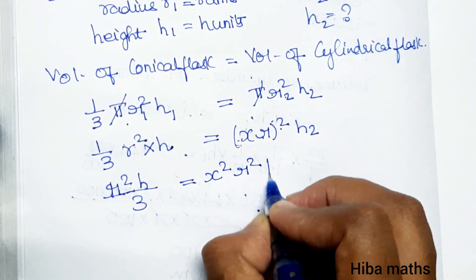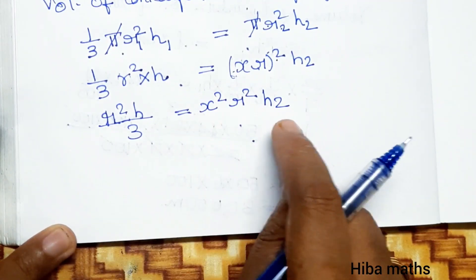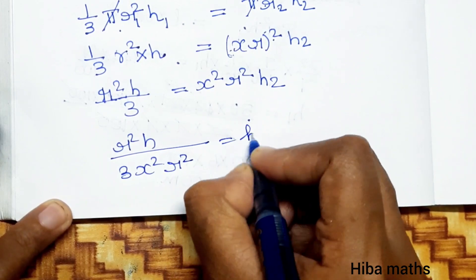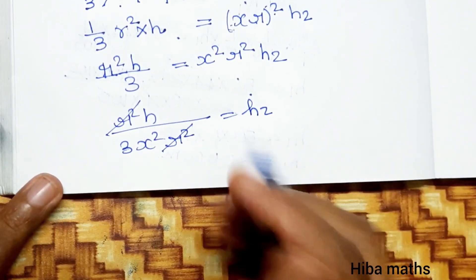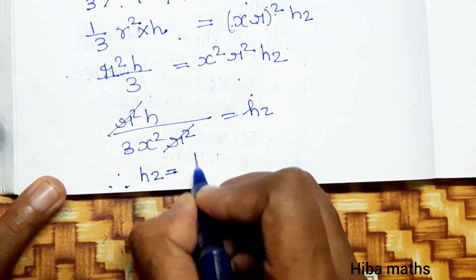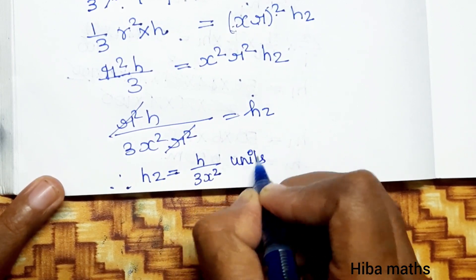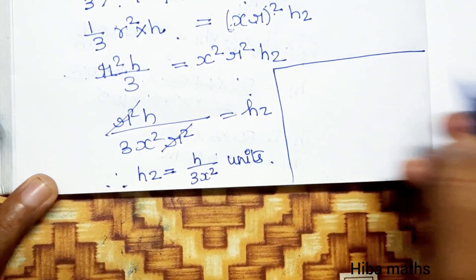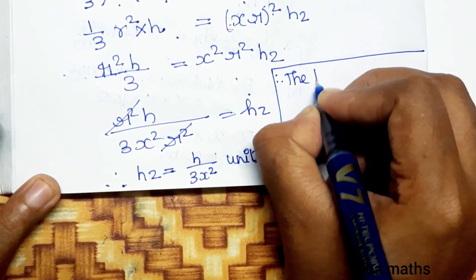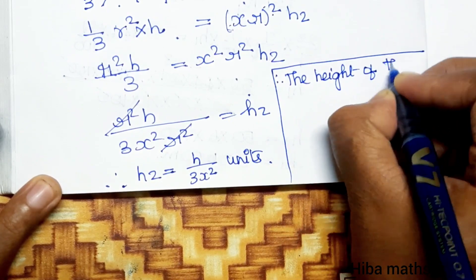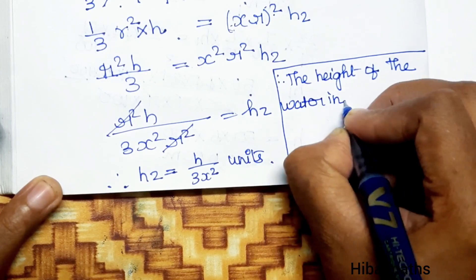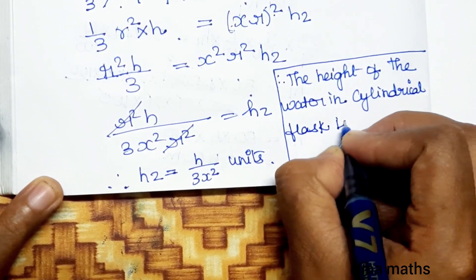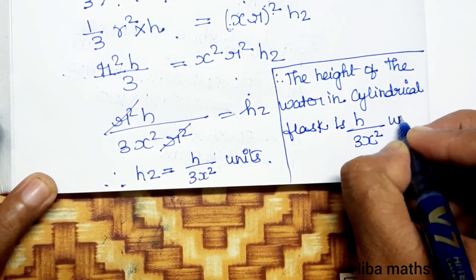So r²h divided by 3 equals x²r² into h₂. The r² terms cancel on both sides, giving h₂ = h divided by (3x²). Therefore, the height of the water in the cylindrical flask is h/(3x²) units.